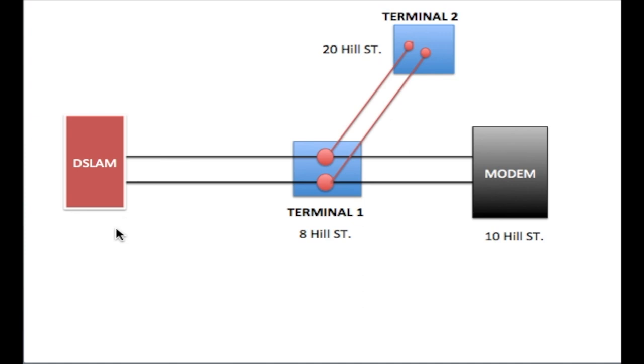Here is a diagram of a high-speed internet line going from the DSLAM, which stands for Digital Subscriber Line Access Multiplexer, to the modem at this end. Normally you have a line going from the DSLAM to the modem, and of course it will go through a terminal.